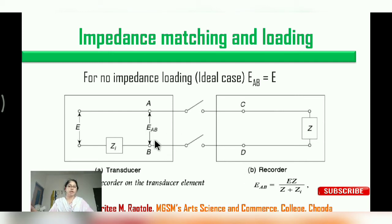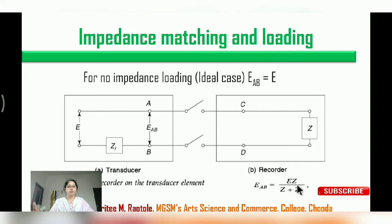We have a transducer voltage EAB, and this voltage is represented by EZ. For the loading effect, EAB is equal to EZ — that is, output voltage divided by input impedance plus output impedance. So EAB is equal to EZ upon Z plus ZI. This is the loading effect equation.